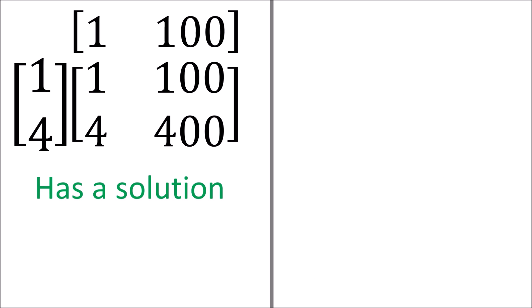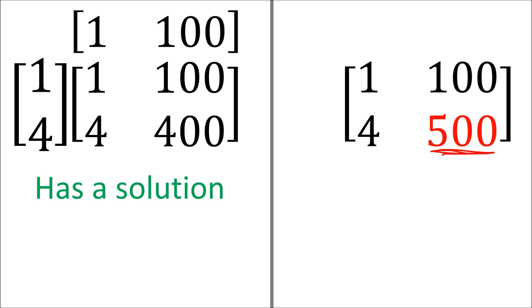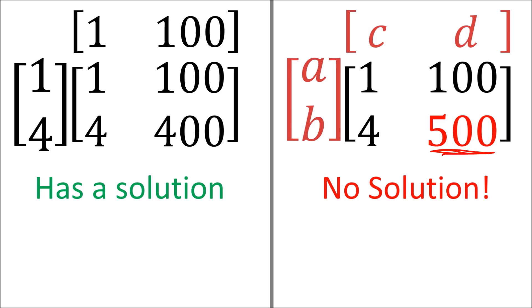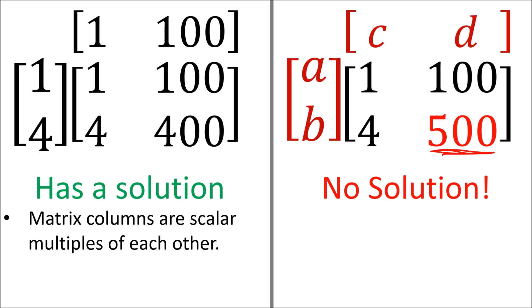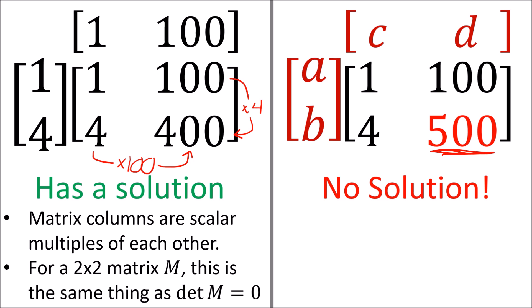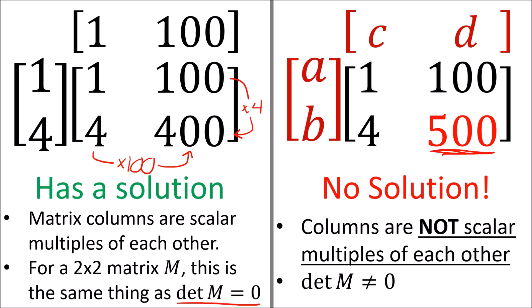Not all 2x2 matrices can be factored into a column and a row. For example, changing the 400 to a 500 in our matrix means it cannot be factored — there are no solutions for A, B, C, D. The reason the first matrix can be factored is because the columns are all multiples of each other: the first column multiplied by 100 gives the second column. Equivalently, the rows are multiples of each other. In the specific case of a 2x2 matrix, this is the same as saying the determinant is 0. With the other matrix, the columns are not multiples of each other and the determinant is non-zero, so it cannot be factored into a column and a row.